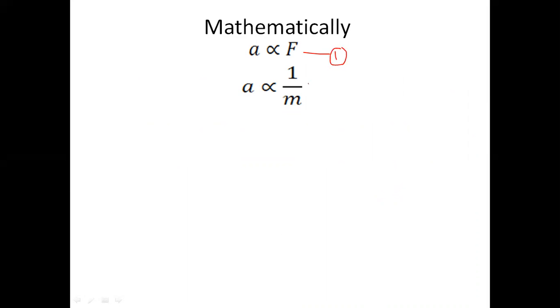This process can be represented mathematically: force and acceleration are directly proportional to each other, and acceleration is inversely proportional to mass. That means if we apply more force, the body will accelerate more, and if there is a larger mass, the acceleration will be less. Combining these two equations, we get: a is directly proportional to F and inversely proportional to m, which can be rearranged to: F is directly proportional to ma.